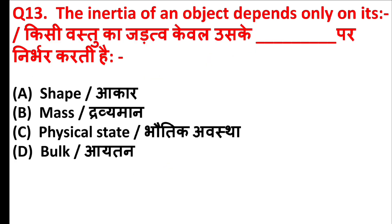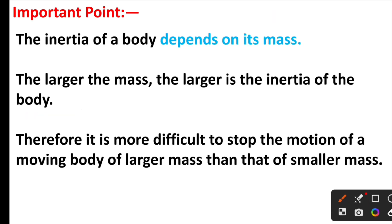The inertia of an object depends only on its what? The right answer is option B: Mass. Friends, the inertia of a body depends on its mass. The larger the mass, the larger is the inertia of the body. Therefore, it is more difficult to stop the motion of a moving body of larger mass than that of smaller mass.